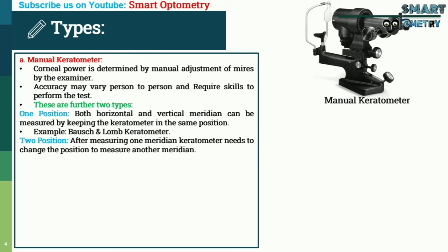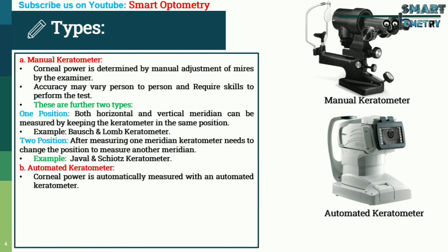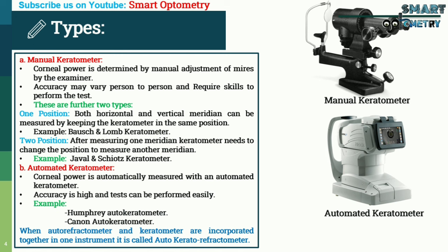Two-position keratometer: after measuring one meridian, the keratometer needs to change position to measure the other meridian. Example: Javal and Schiotz keratometer. Automated keratometer: corneal power is automatically measured with high accuracy and the test can be performed easily. Example: Humphrey autokeratometer, Canon autokeratometer. When an autorefractometer and keratometer are incorporated together in one instrument, it is called an autokeratorefractometer.